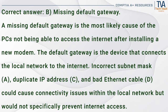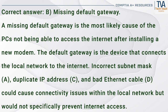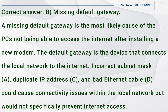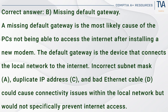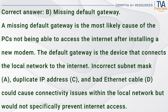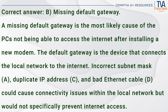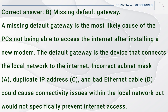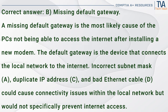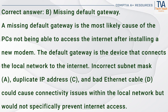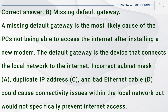Correct answer: B. Missing default gateway. A missing default gateway is the most likely cause of the PCs not being able to access the internet after installing a new modem. The default gateway is the device that connects the local network to the internet. Incorrect subnet mask (A), duplicate IP address (C), and bad Ethernet cable (D) could cause connectivity issues within the local network, but would not specifically prevent internet access.